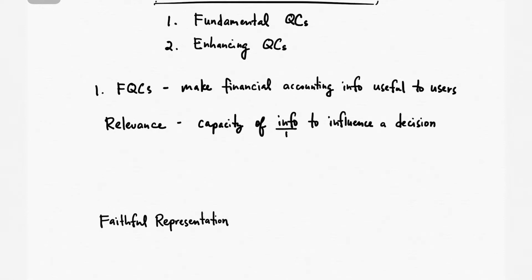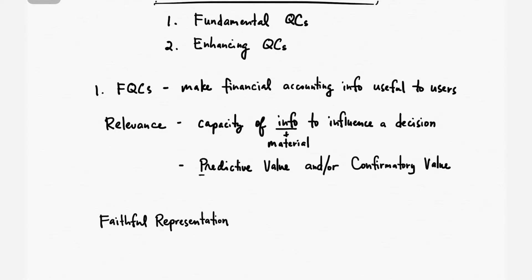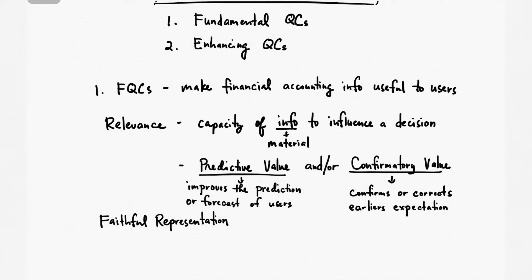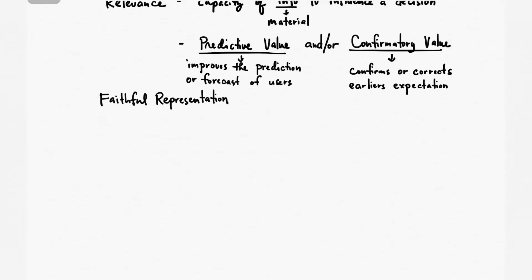There will be relevance if there is a capacity of the information to influence a decision, or we can say that the information is material. For information to be relevant, it should have predictive value and/or confirmatory value. There is predictive value if the information improves the prediction or forecast of users. There is confirmatory value if the information confirms or corrects earlier expectations. So, there is relevance if there is predictive value and/or confirmatory value — you can have one or both.